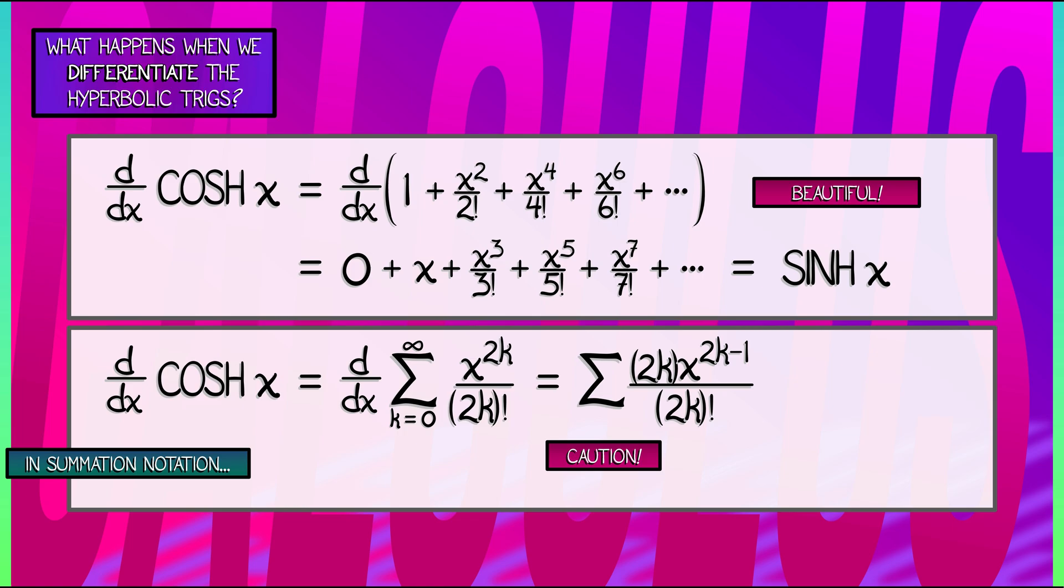The safe thing is to say, what we're going to do is take the sum as k goes from 1 to infinity. Because that k equals 0 term, that's gone.